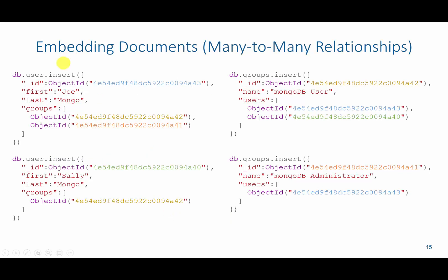In many-to-many relationships, we would have a user who belongs to multiple groups — this group links over to this group, and this group links down to this group. On the other side, we have groups that have many users, with the object IDs of the users referencing each respective user.